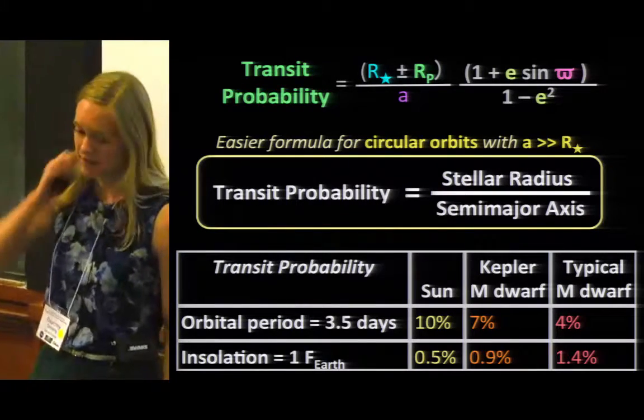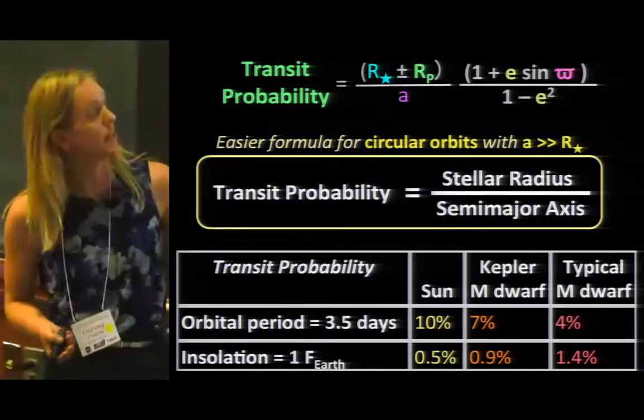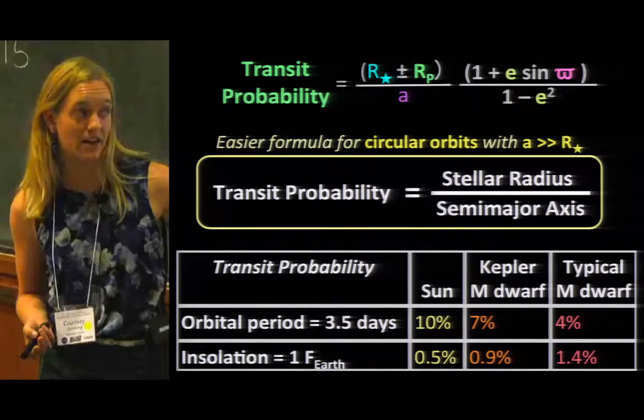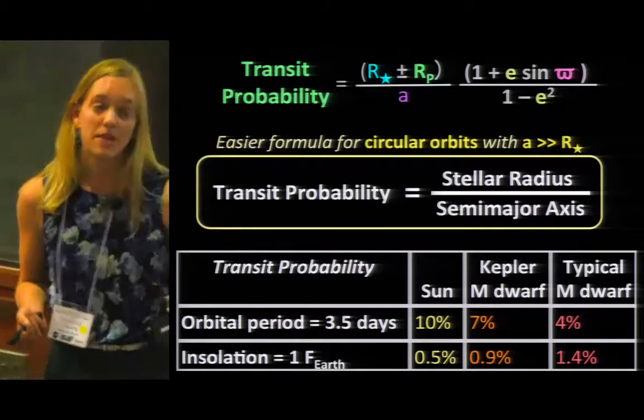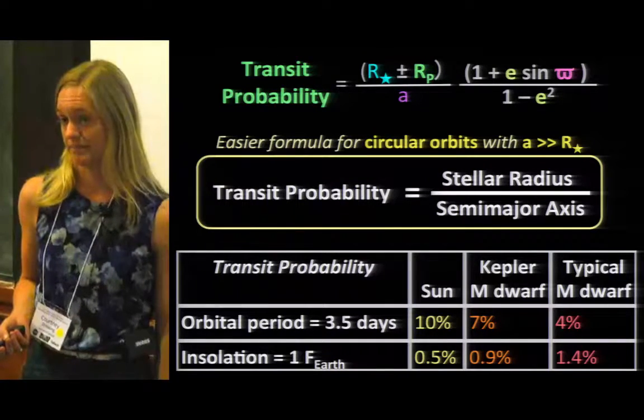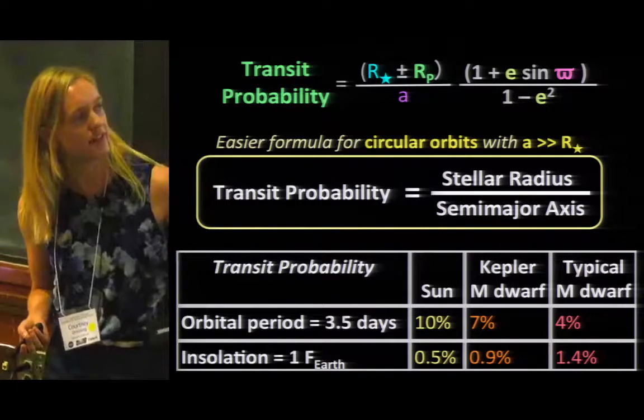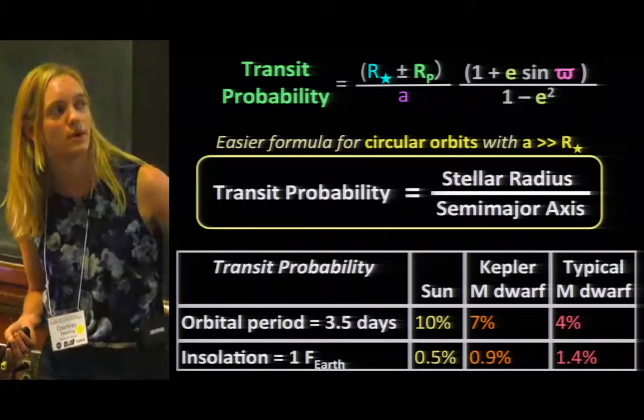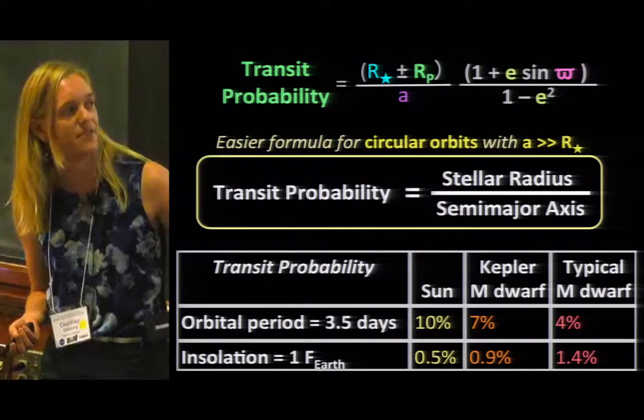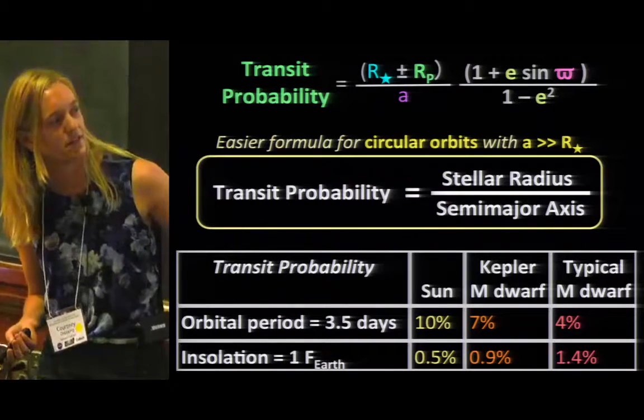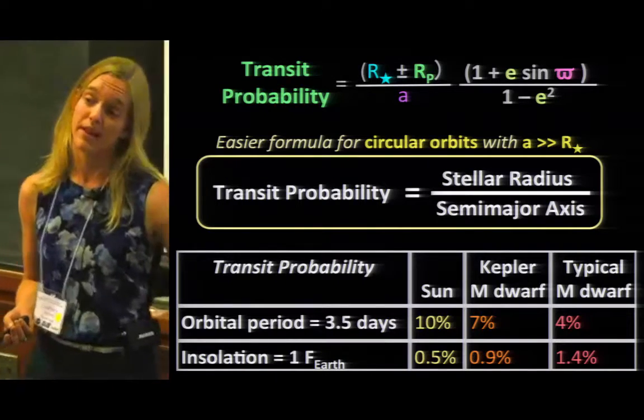Putting this into actual numbers, what we would find is if we have a planet that's in a 3.5-day period, orbiting a star like the Sun, the odds that that planet would appear to transit are 10%. We can change the size of our star. If we go from a Sun-like star to an early M dwarf or a late M dwarf, where here this is about 50% the size of the Sun, this is going to be 20%. We go from 7% to 4%.